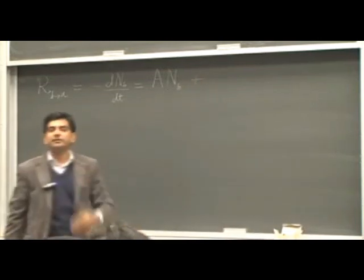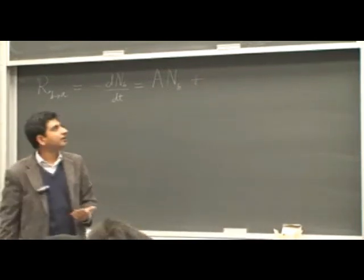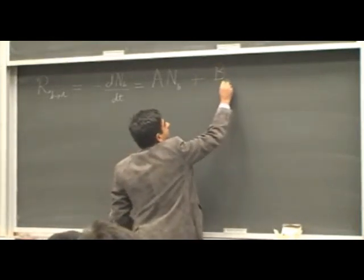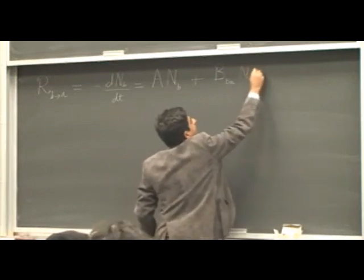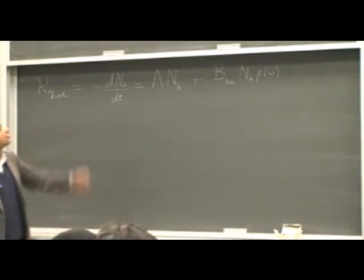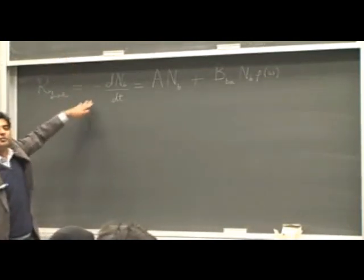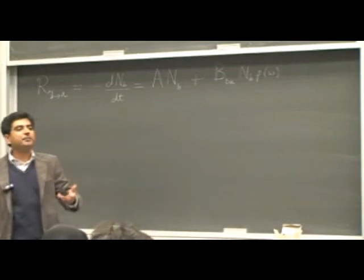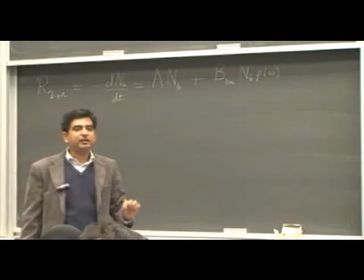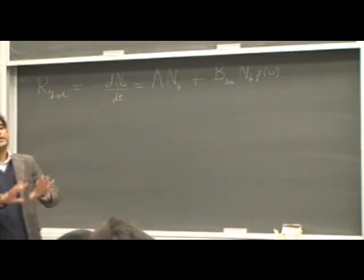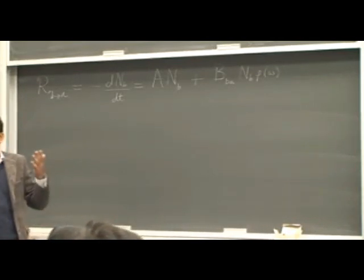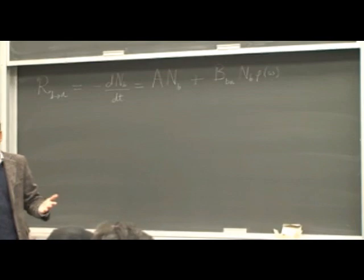But there is also the process of stimulated emission. So we can write a term for the stimulated emission, B_BA times N_B times ρ(ω). So this is the rate of absorption and this is the total rate of emission. And A and B are constants that we want to find. And this terminology A and B was introduced by Einstein. Now in a state of equilibrium, the rate of absorption must equal the rate of emission.